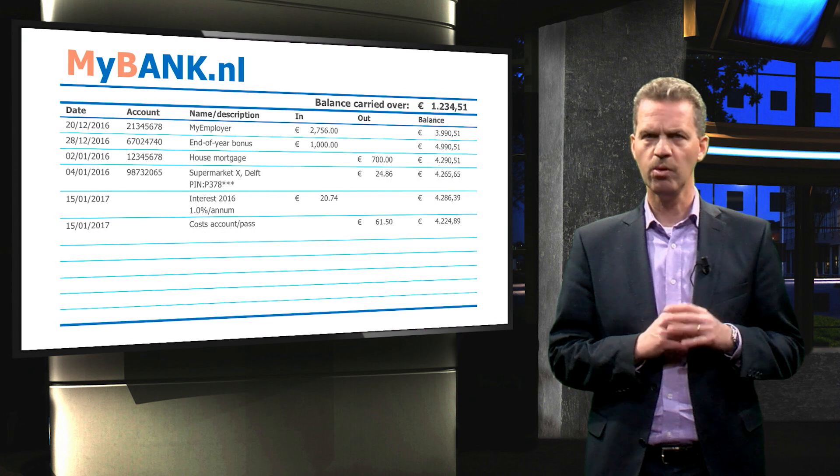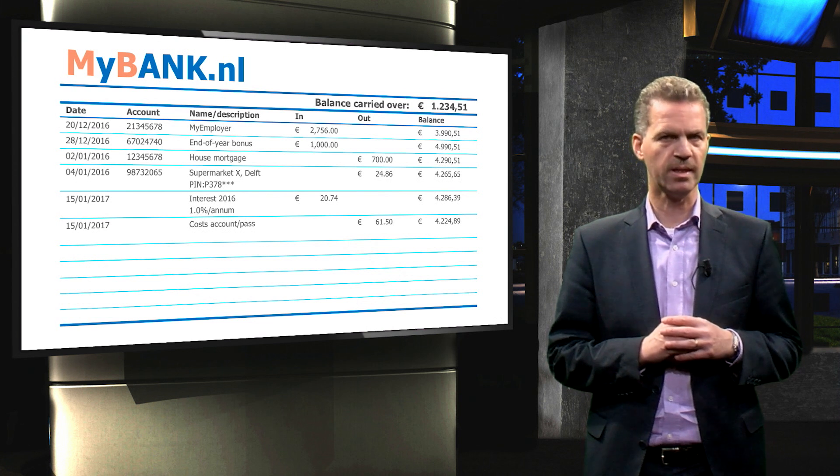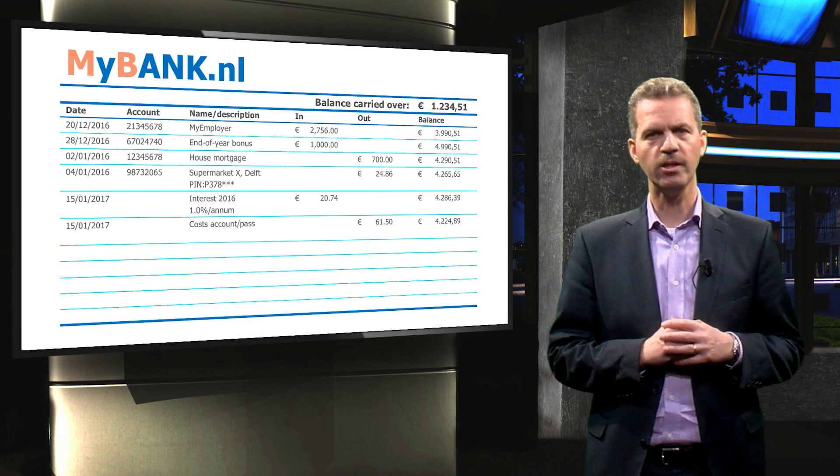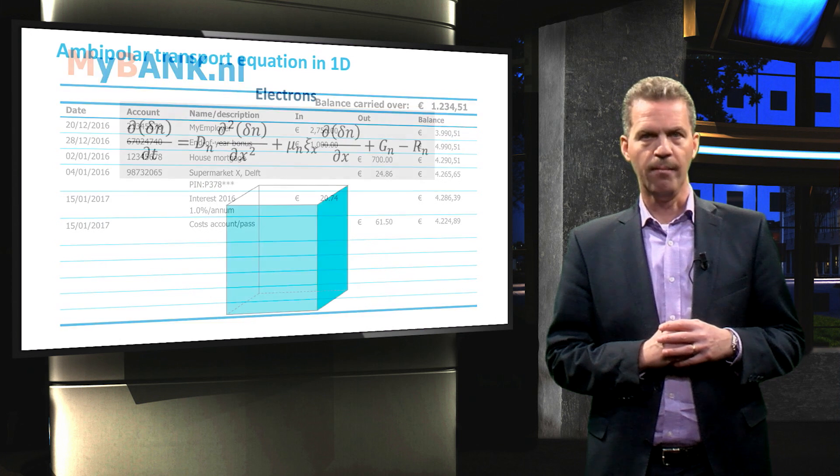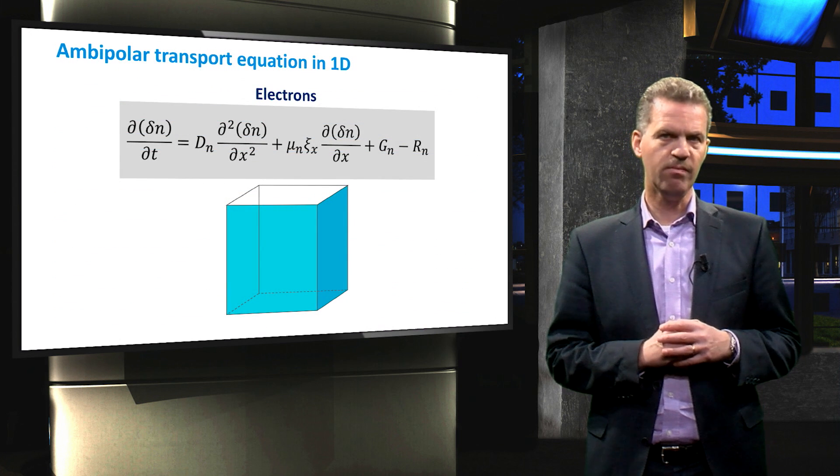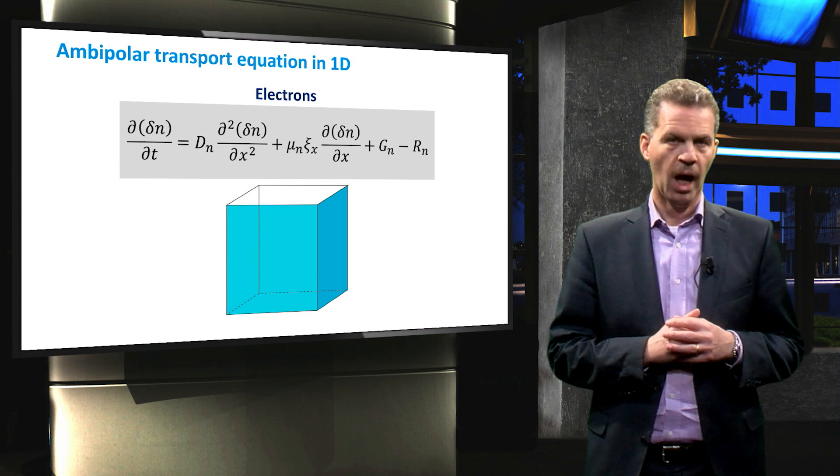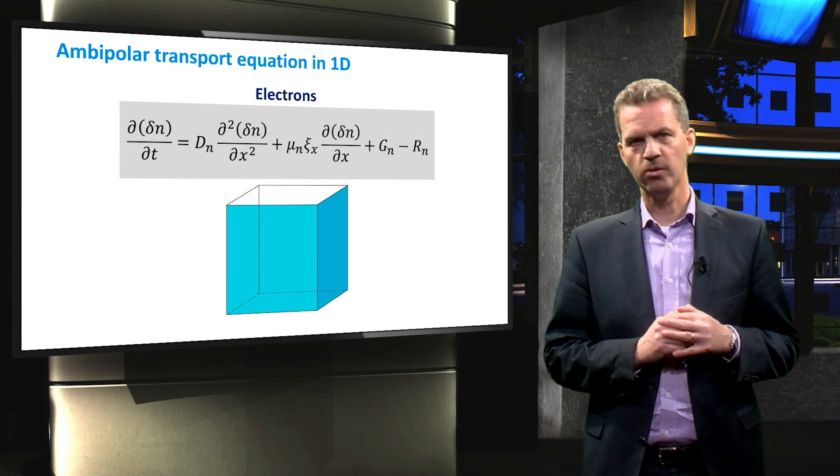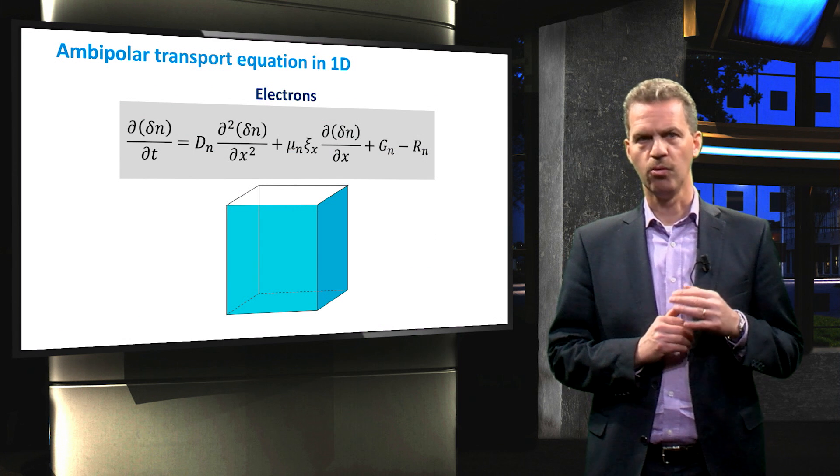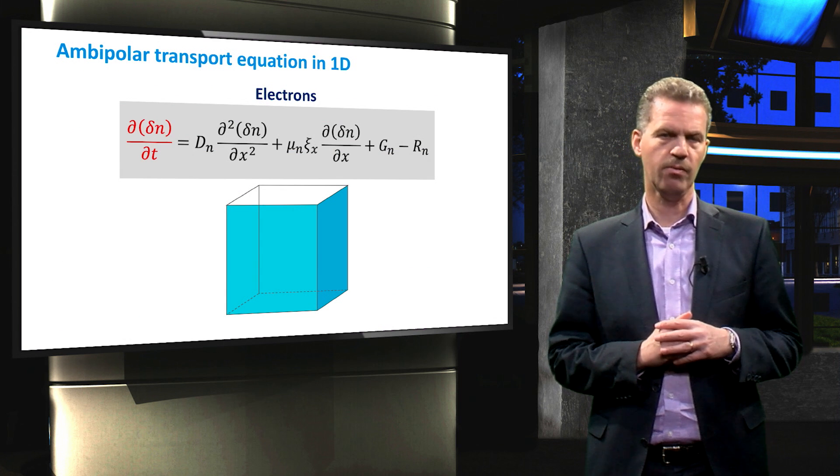In this lecture, we will not derive this equation mathematically, but we will conceptualize using the volume element as shown earlier. The ambipolar transport equation is given by the following relation. This equation relates all possible charge transport processes in the volume element to the time rate change of the carrier concentration.